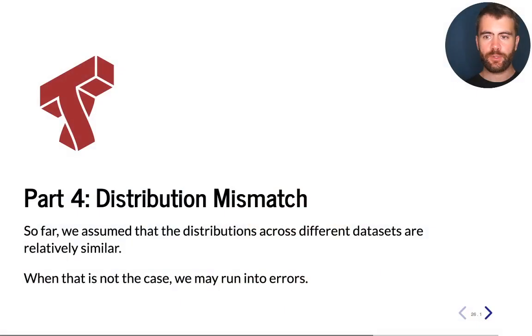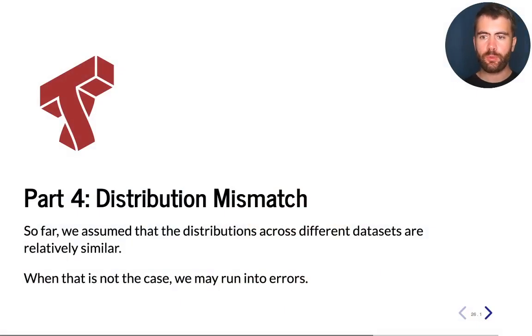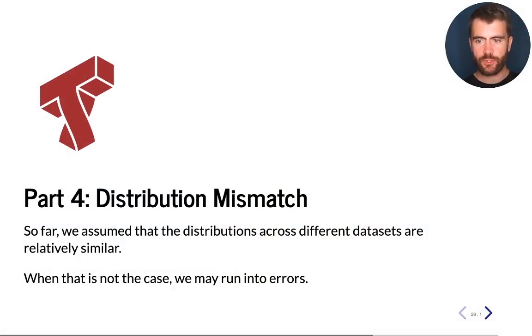We have now reached part 4 of Lecture 22 of Machine Learning. In this part of the lecture, I will talk about a particular problem that affects machine learning models called distribution mismatch.